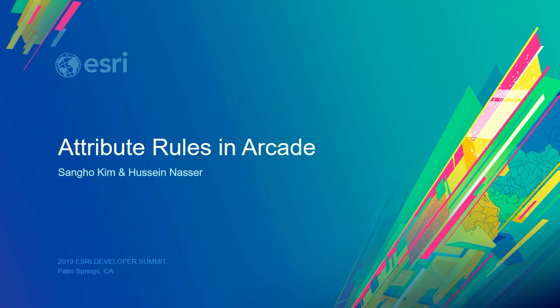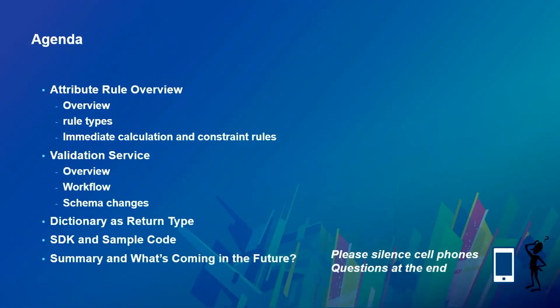Attribute rules is a concept in the GeoDatabase. Today's agenda mostly consists of three parts. We'll go over the general overview of attribute rules with details on certain rule types. The second part covers the validation service in detail. Third, we'll talk about dictionary as a return type. At the end, we'll show SDK and sample code, plus summarize what's coming in future releases. Please hold questions for Q&A at the end.